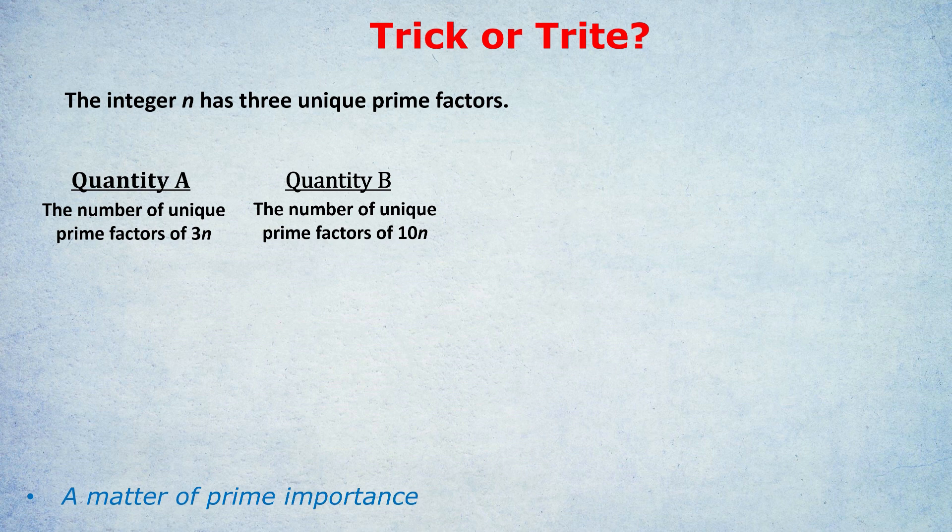And bigger numbers tend to have more prime factors. So that's why some people would pick quantity B. Other people would pick quantity B for more smart reasons, which is that 10, if you break it down, contains a 5 and a 2.